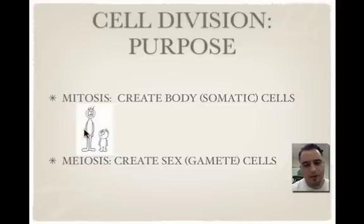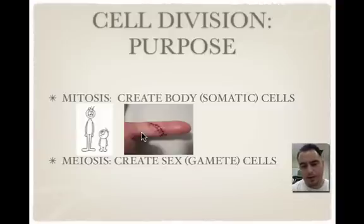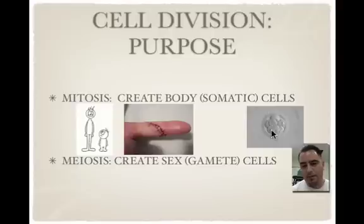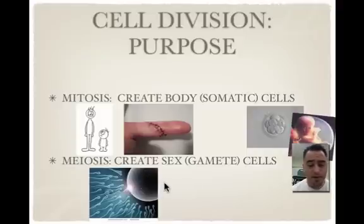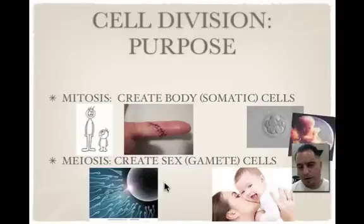Why do we need mitosis? We need it to grow — we get bigger by adding more identical cells to our body. When you get a cut or a bruise, we also do it to repair and replace dead, injured, or old cells. Also to develop — that's how we go from a zygote to a fully developed organism. Meiosis creates sperm and egg for reproduction, and it ensures every offspring is different to ensure variety, which helps us overcome new changes in environments.